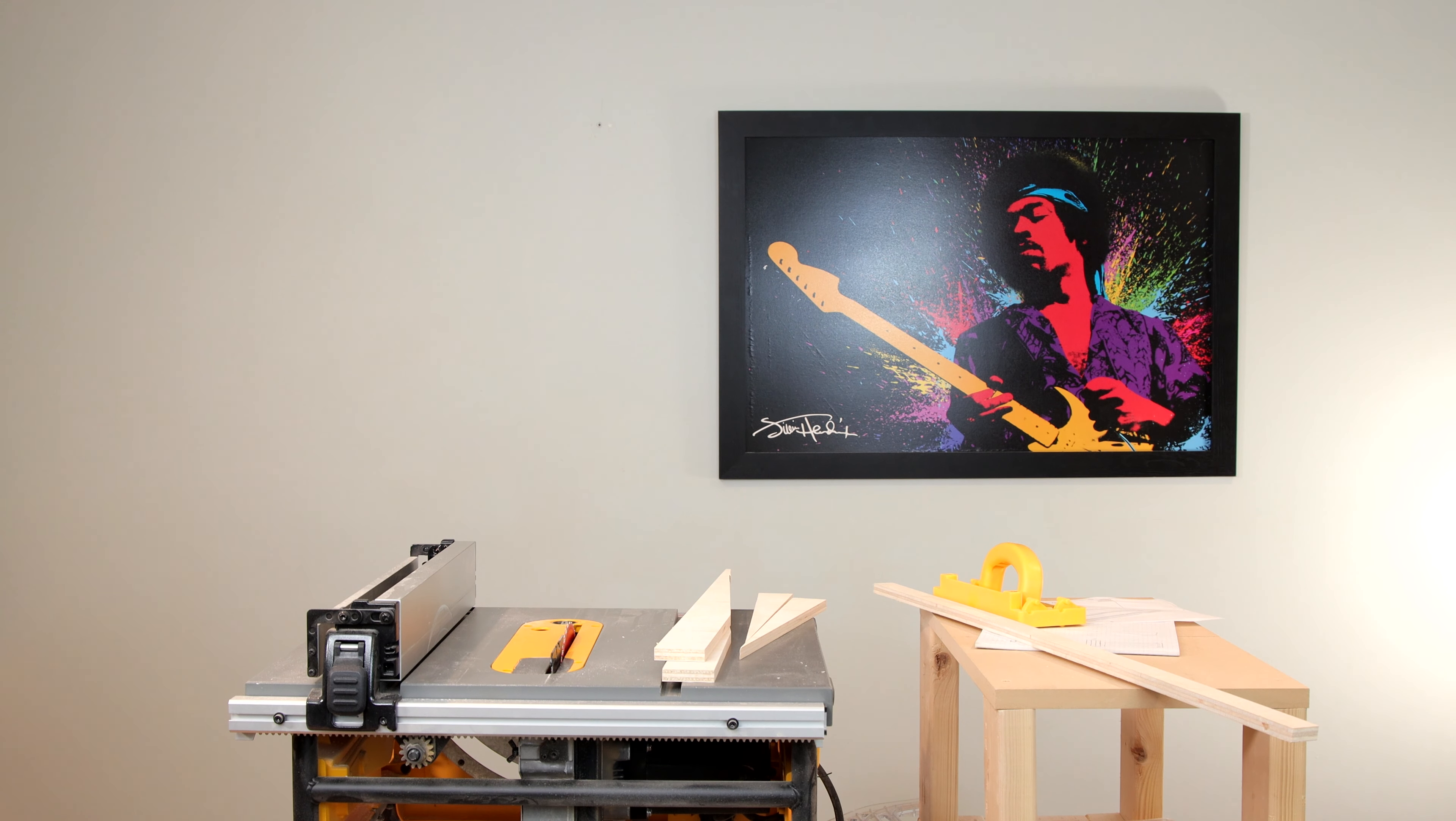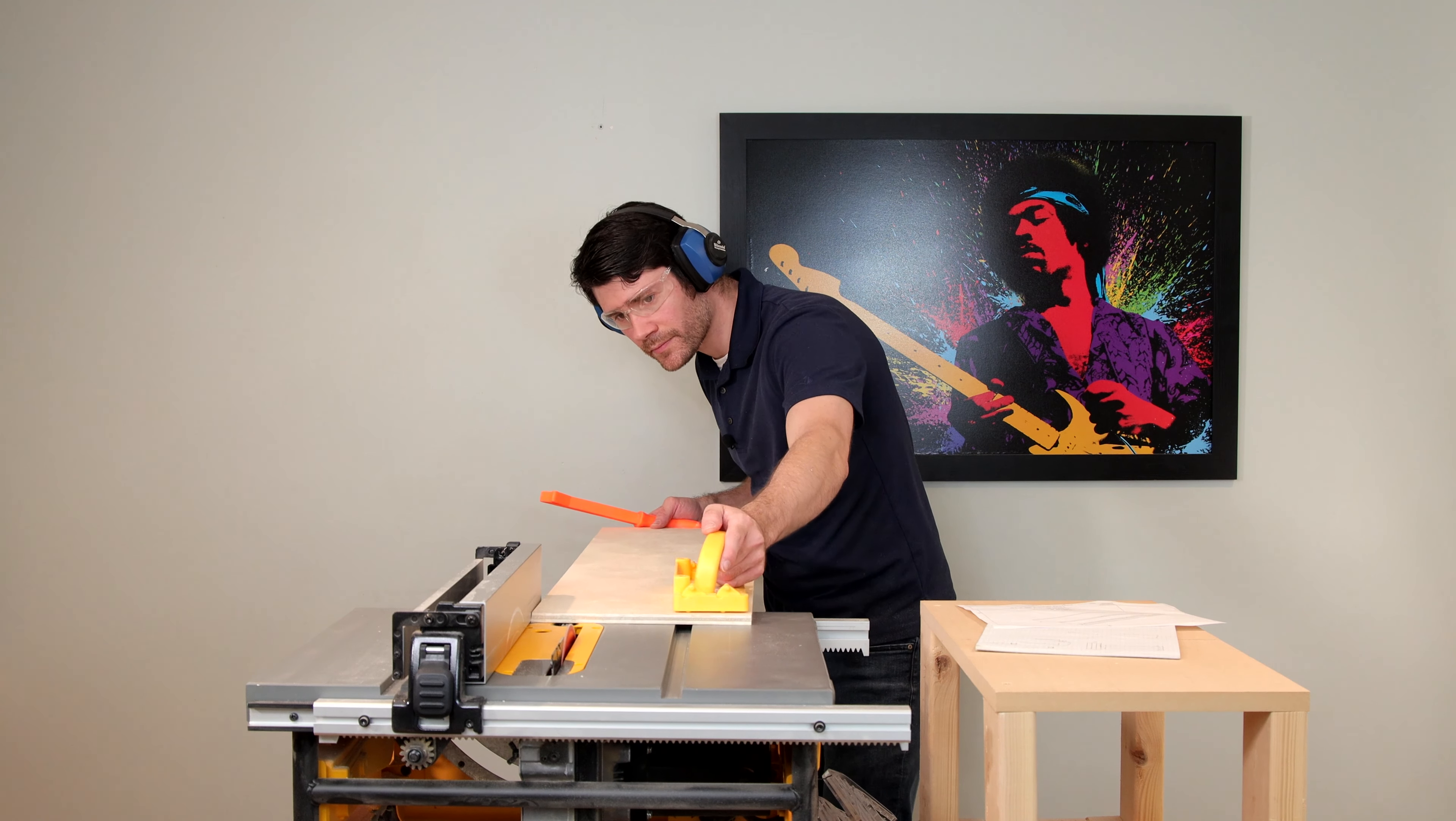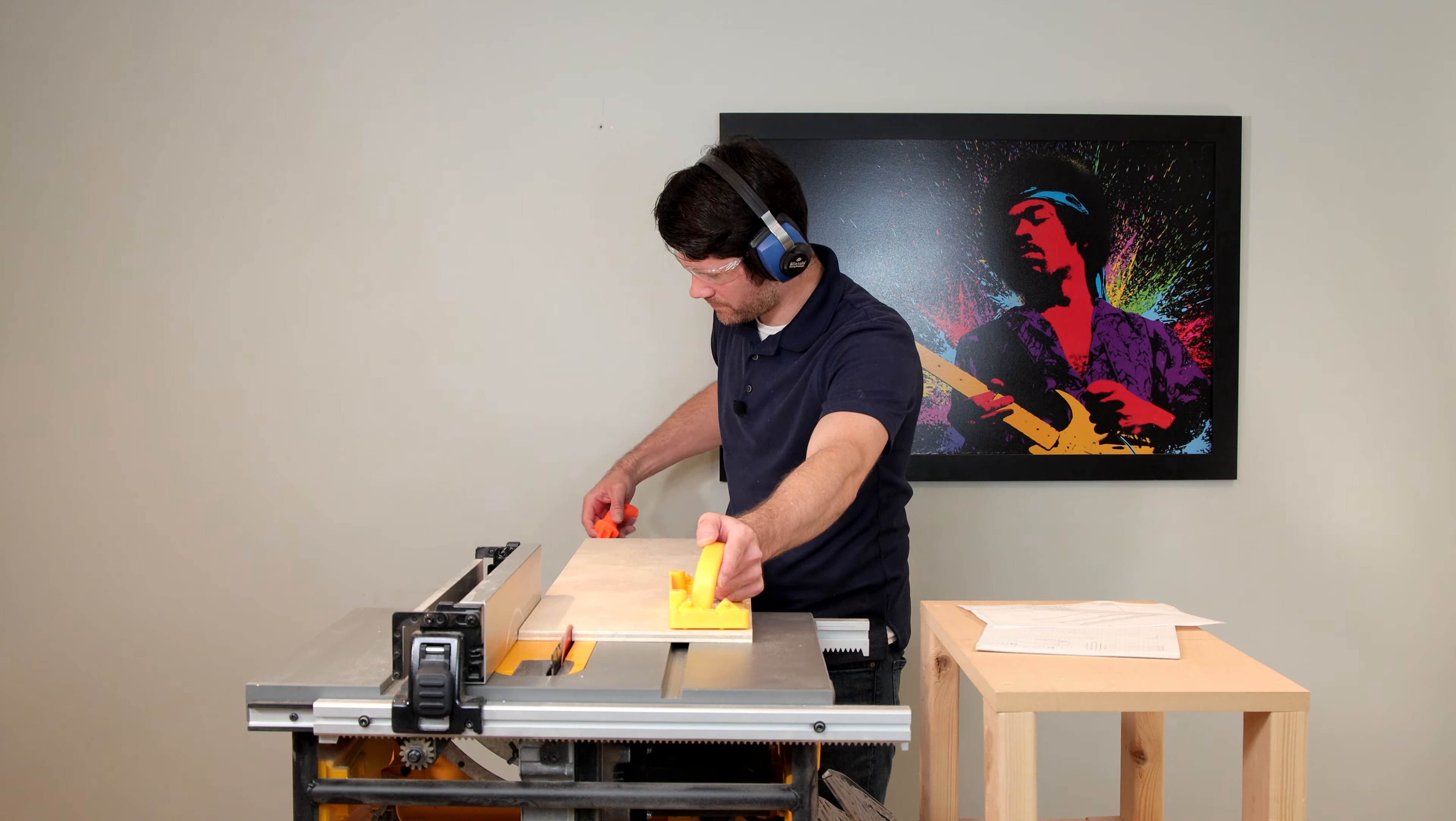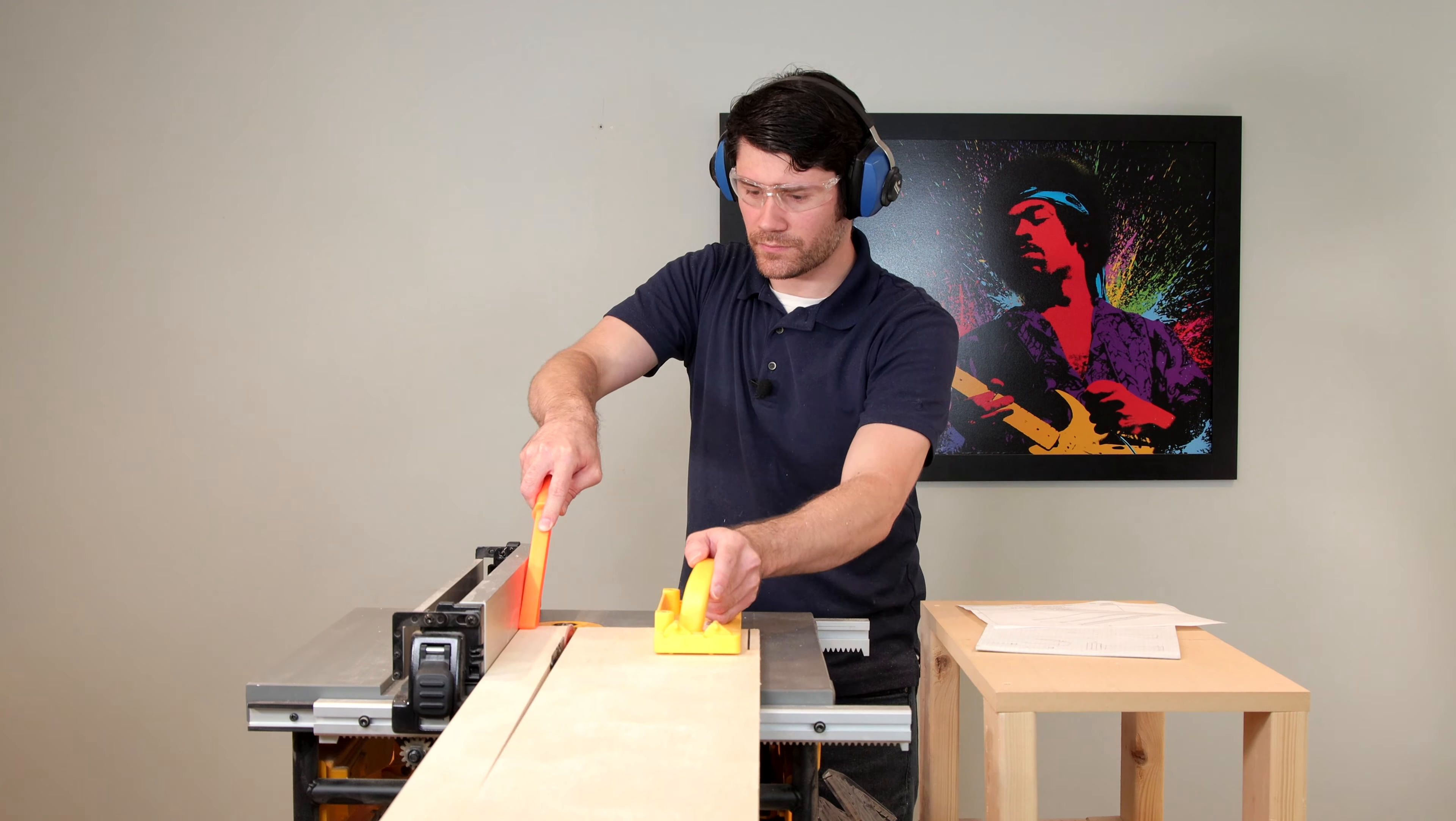The final cut will be for the back of the pedal board. Setting the fence to two and a half inches, we can rip the board that has a seven degree angle on one side and a straight cut on the other.